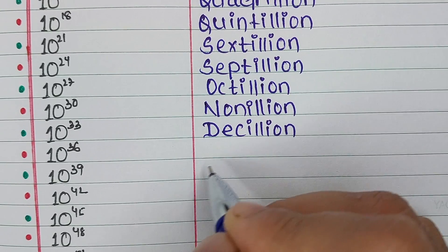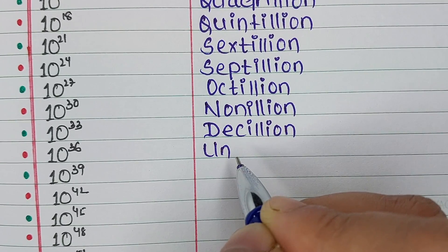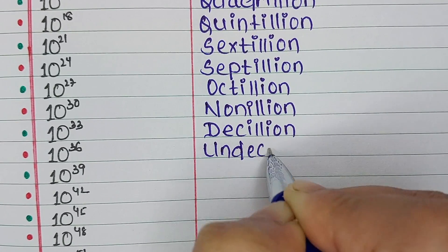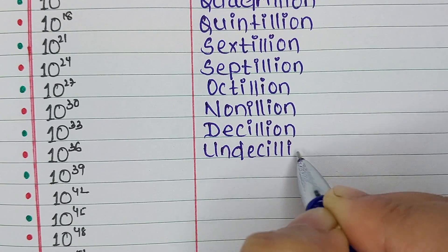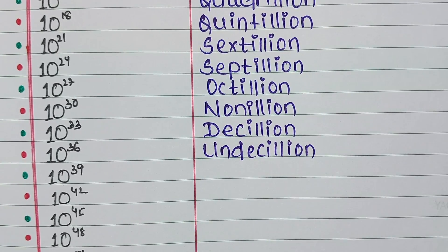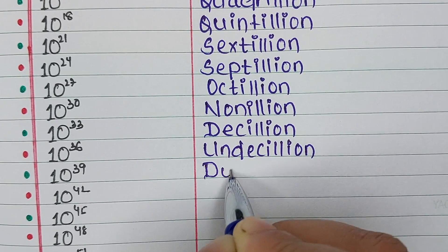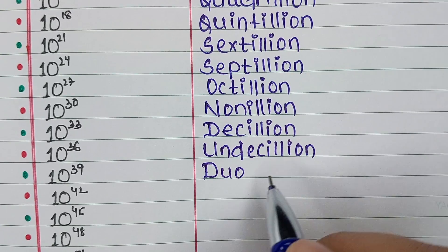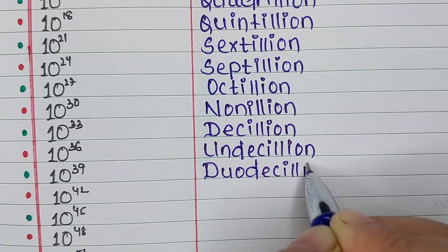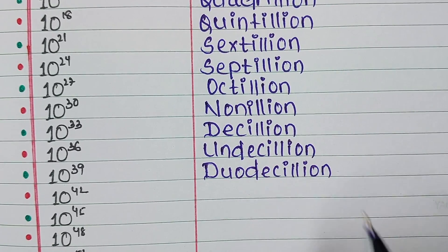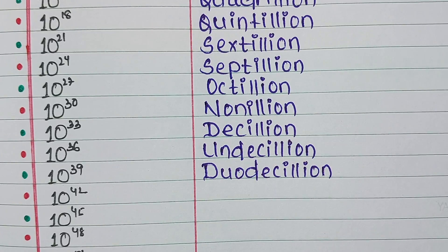Next up is 10 to the power 36. It is called Undecillion. Next up is 10 to the power 39. It is called Duodecillion.